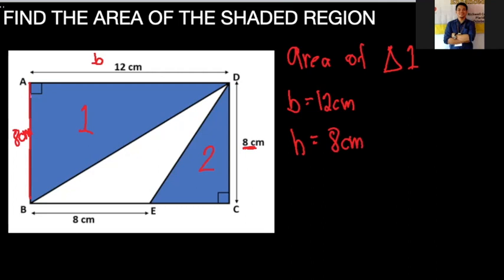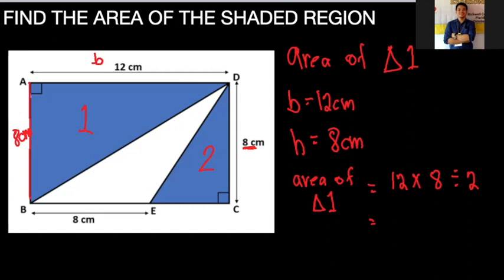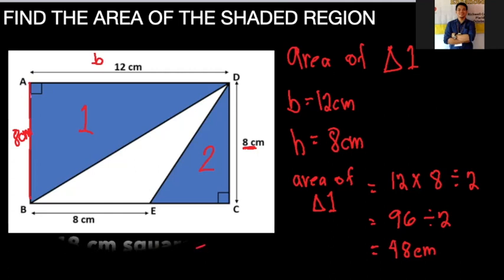Now solving the area of Triangle 1: base is 12 times height 8, then divide by 2. So 12 times 8 equals 96, and 96 divided by 2 equals 48. Don't forget to write the unit — so this is 48 centimeters squared. We're done with Triangle 1.